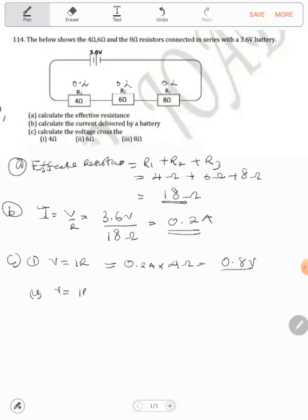For R2, V = I × R. Current is the same, 0.2 amperes, times resistance 6. So 0.2 × 6 gives us 1.2 volts.